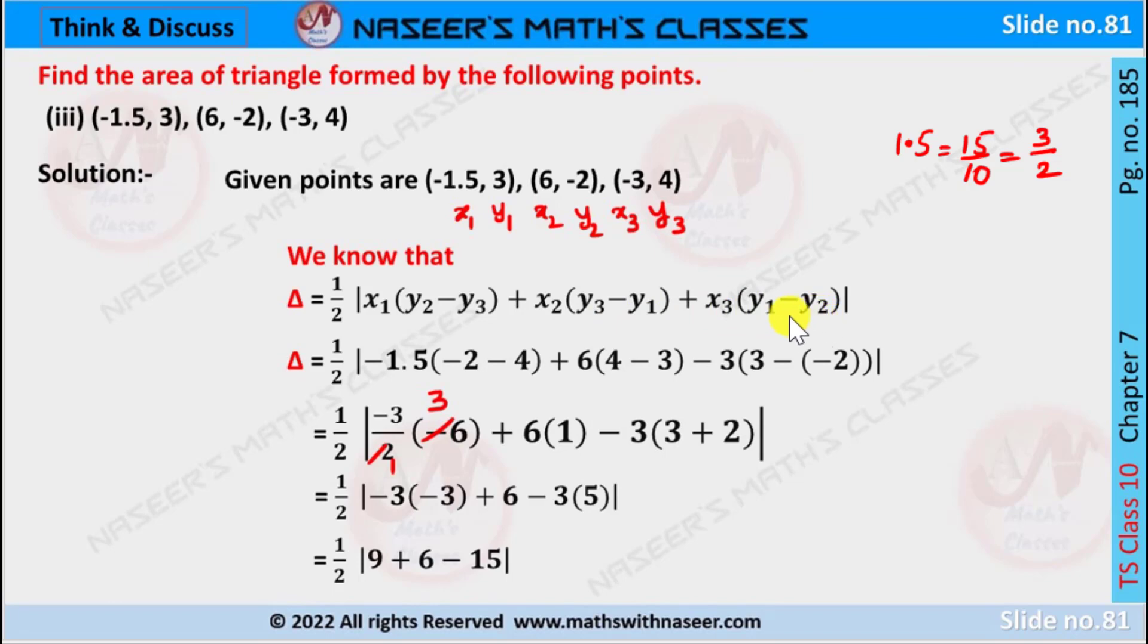Now we substitute the values. Delta equals 1 by 2 mod minus 1.5 times minus 2 minus 4 plus 6 times 4 minus 3 minus 3 times 3 minus of minus 2.